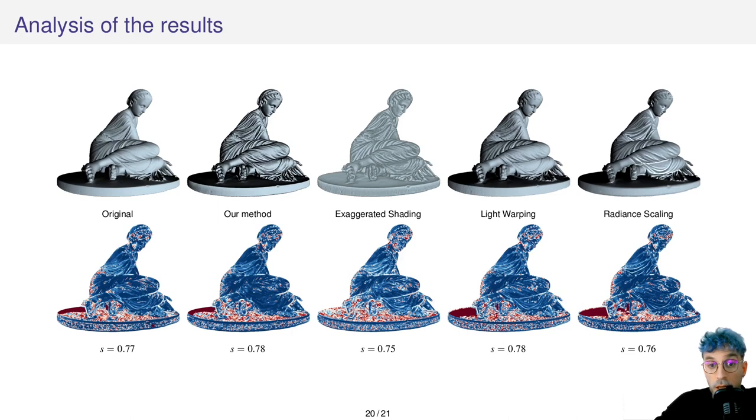Here you can see that all the methods perform quite well. It is easily explained. Indeed, the scene being well lit already, the shape is visible almost everywhere.